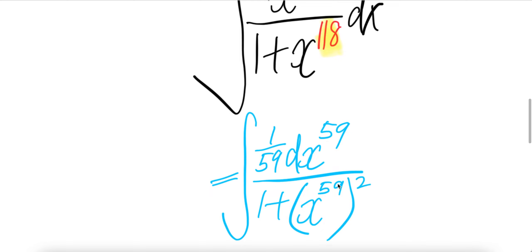When you square this, 9 times 2 is 18, 5 times 2 is 10 plus 1 is 118. So basically this is the same thing as that.